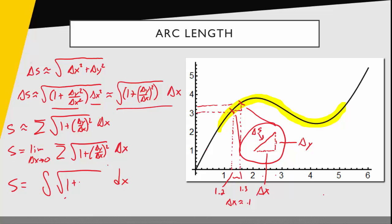if I look at the delta y over delta x piece, as delta x goes to 0, this is going to turn into the derivative of y with respect to x. And so now I have this expression to calculate the exact length of the curve from 1 to 5, or more generally, from some x value a to some x value b. And so this is going to be our formula for arc length.